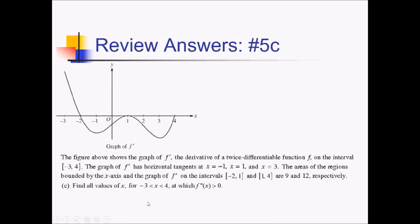For this part of the problem, we want all x values where f double prime is greater than zero. Since we have the graph of f prime, f double prime is the slope of f prime, so we need to see where f prime is increasing. f prime is increasing on the interval from negative one to positive one, and also on the interval from three to four. This tells us that f double prime is positive on those same intervals.